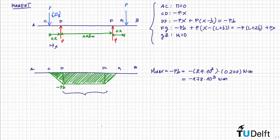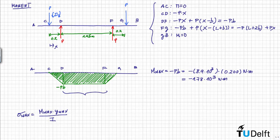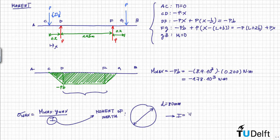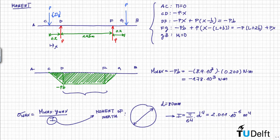Going back to the flexural formula, σmax equals M_max times Y_max divided by the moment of inertia. We calculate the moment of inertia for the circular cross-section with diameter 80 mm. The standard formula gives I equal to π divided by 64 times D to the power of 4, which equals 2.011 times 10 to the power of negative 6.